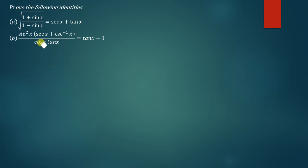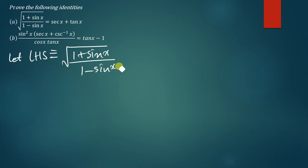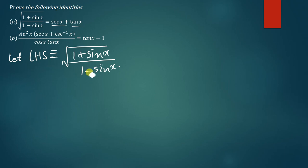Let the left-hand side be identically equal to the square root of (1 + sin x) over (1 − sin x). I'm going to use the principle of the conjugate to simplify this down to sec x + tan x. The conjugate of the denominator is simply the same expression but with the opposite sign in between, so we multiply both numerator and denominator by (1 + sin x), keeping everything under the square root.